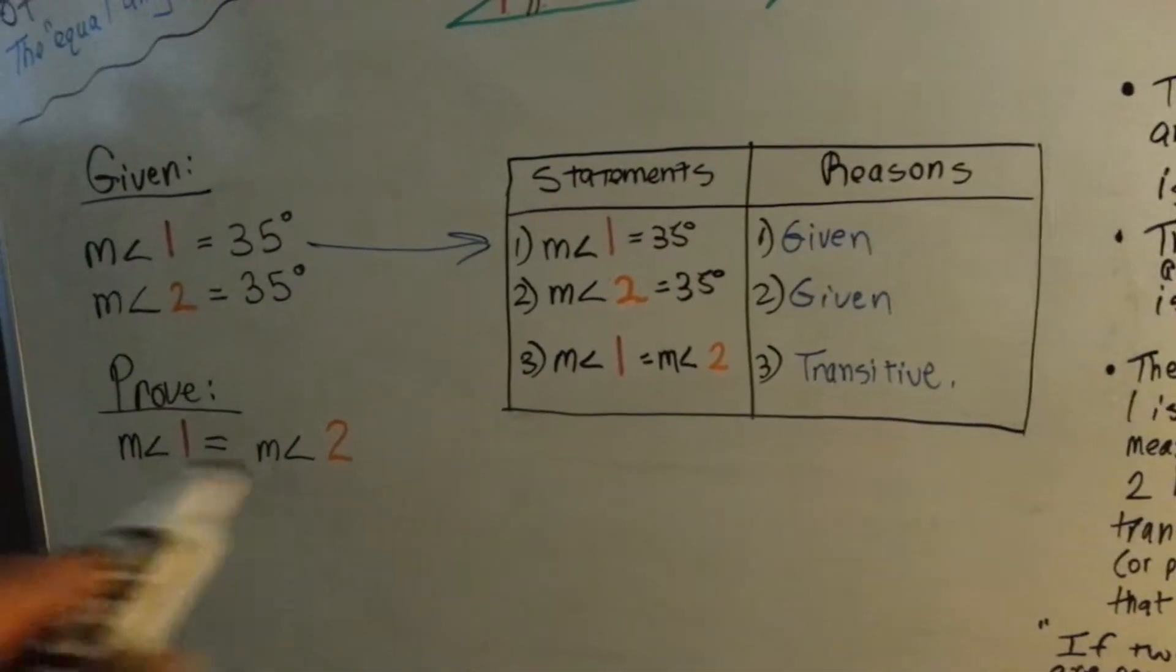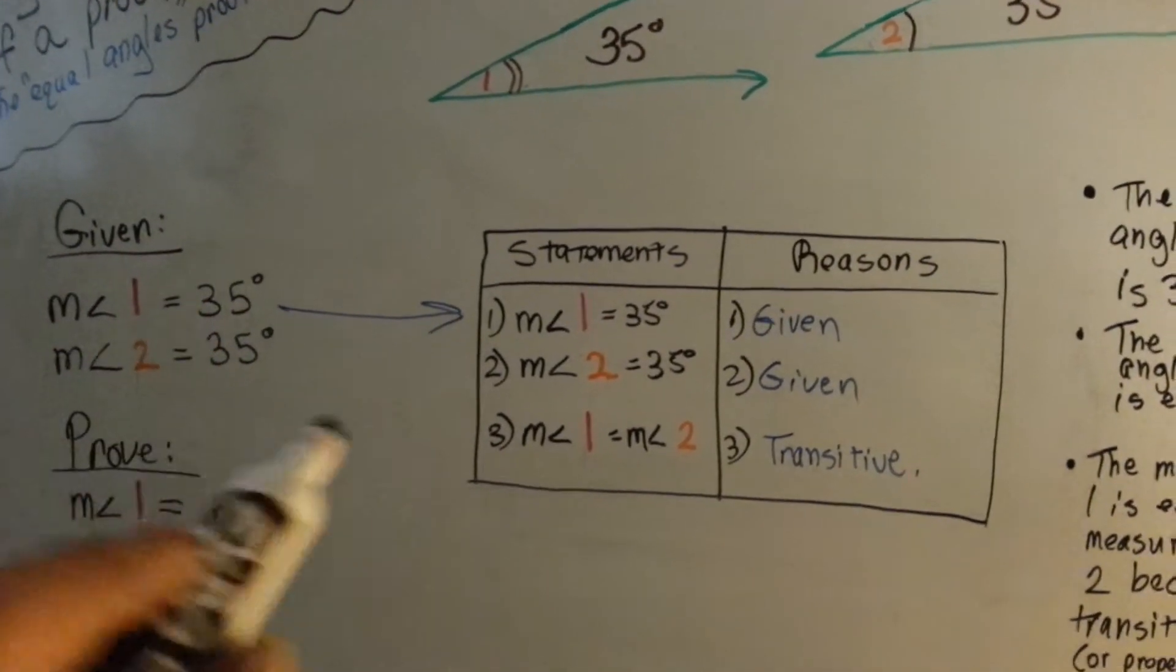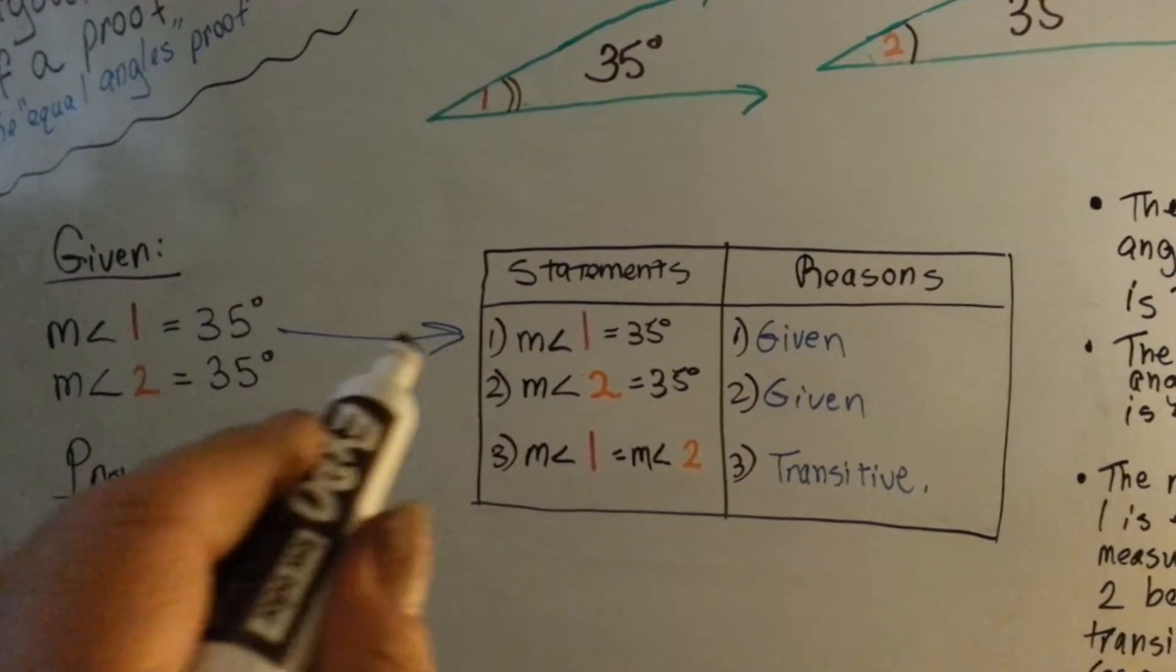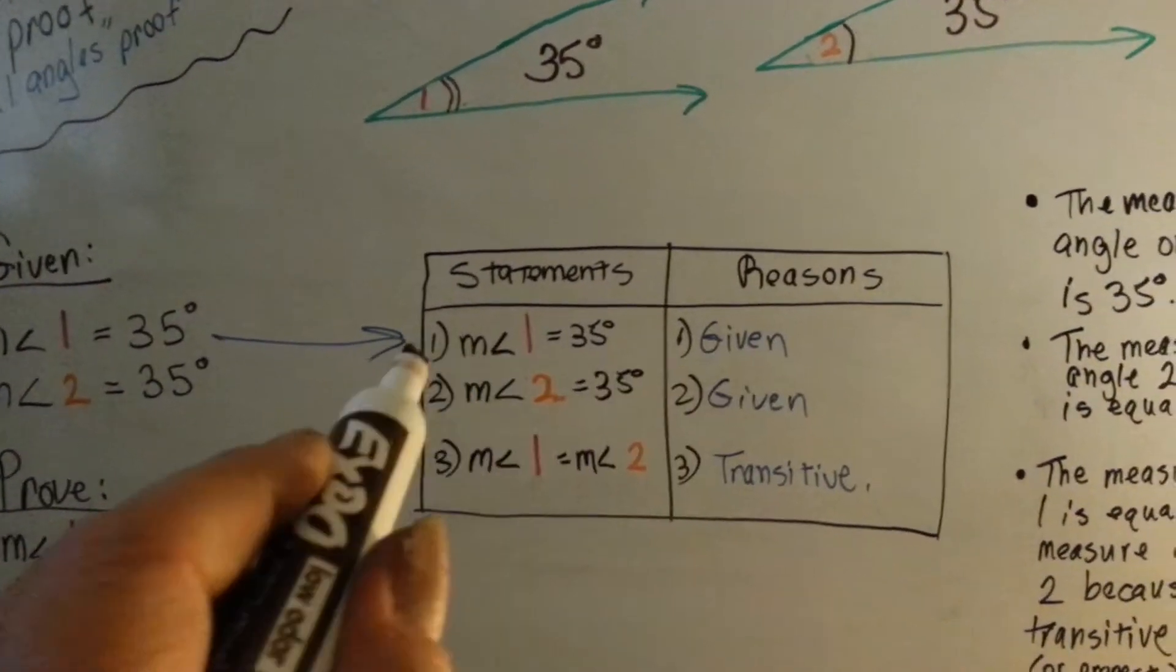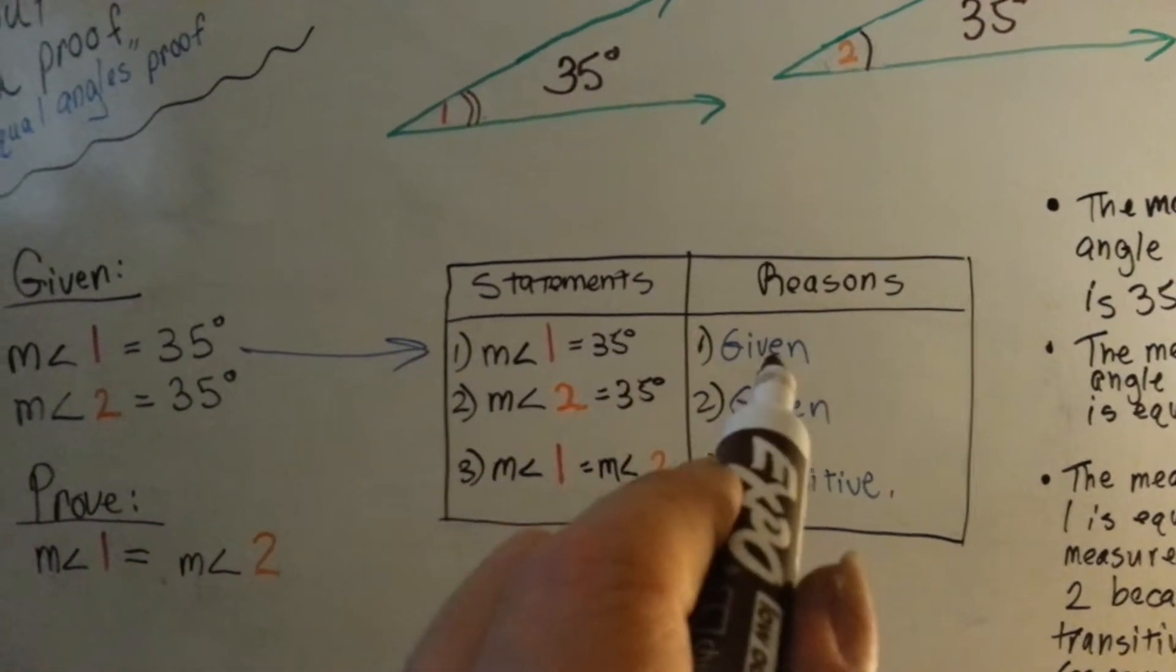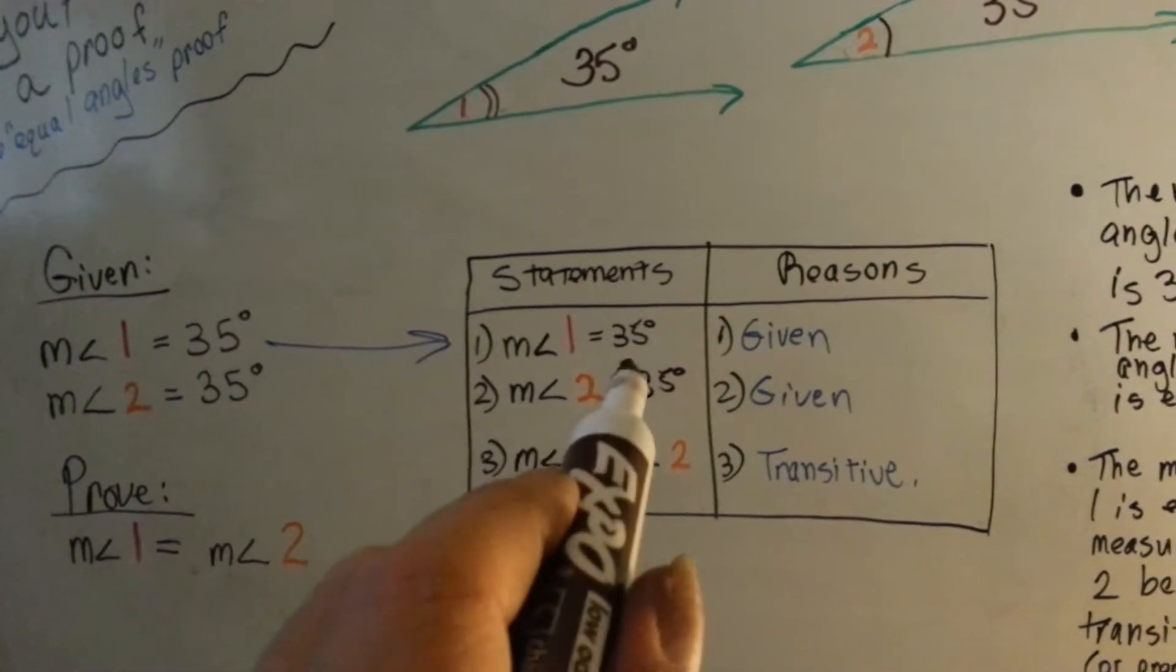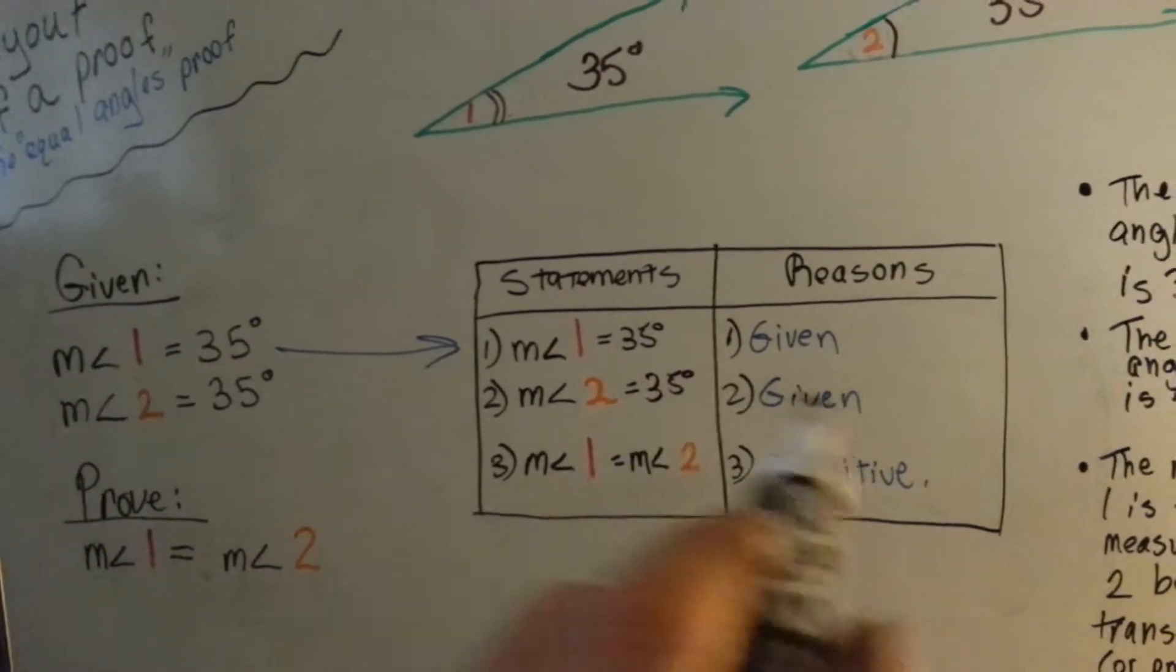We're trying to prove that these two angles are equal to each other even though we know the given is this. So, we bring over our given and we put it in our table right here. And we say the measure of Angle 1 is equal to 35 and the reason is it's given. And we bring this over: the measure of Angle 2 is equal to 35 degrees because it's given.